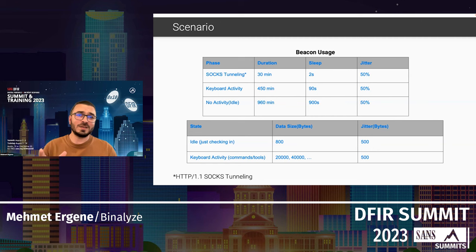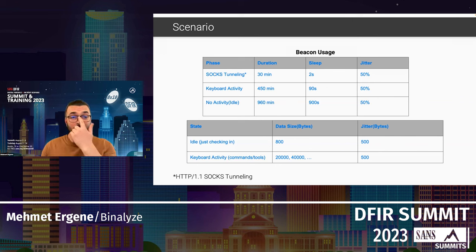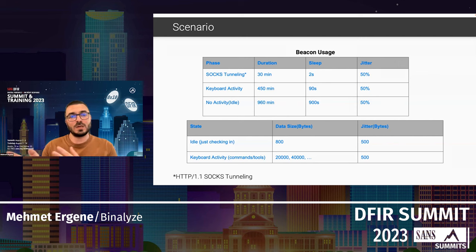I dynamically changed the sleep and jitter values on the fly, so they were never static. In terms of data transfer: when the beacon is idle and just checking in, the data size is around 800 bytes with a jitter value of 500. When a command or tool is executed, the data size increases to around 20–40 kilobytes or more.